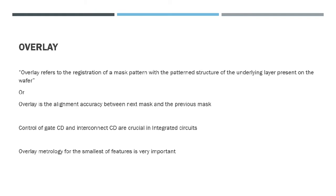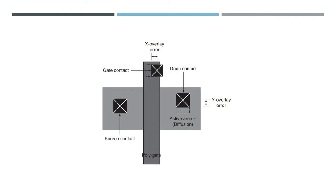Let's have a look at the figure here. If you consider this polysilicon, the via which is a contact to this polysilicon is getting deviated from where it was supposed to be. So this is the overlay error between the center of this poly and the center of this via.